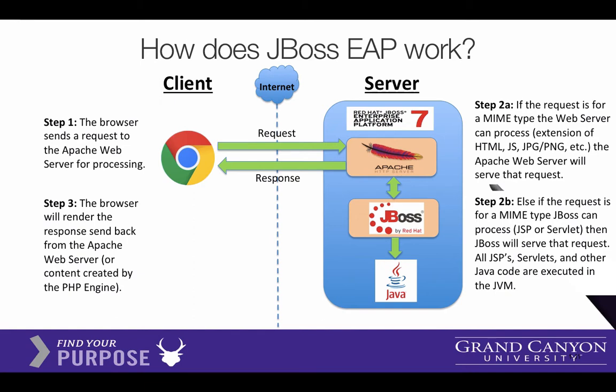A server can handle certain files really quickly, like static pages — HTML, JavaScript, or graphics — and if that's all the browser asked for, they'll immediately be sent. However, if the application requires some processing, Apache will hand off control to another server like the JBoss server, which you might call an application server.